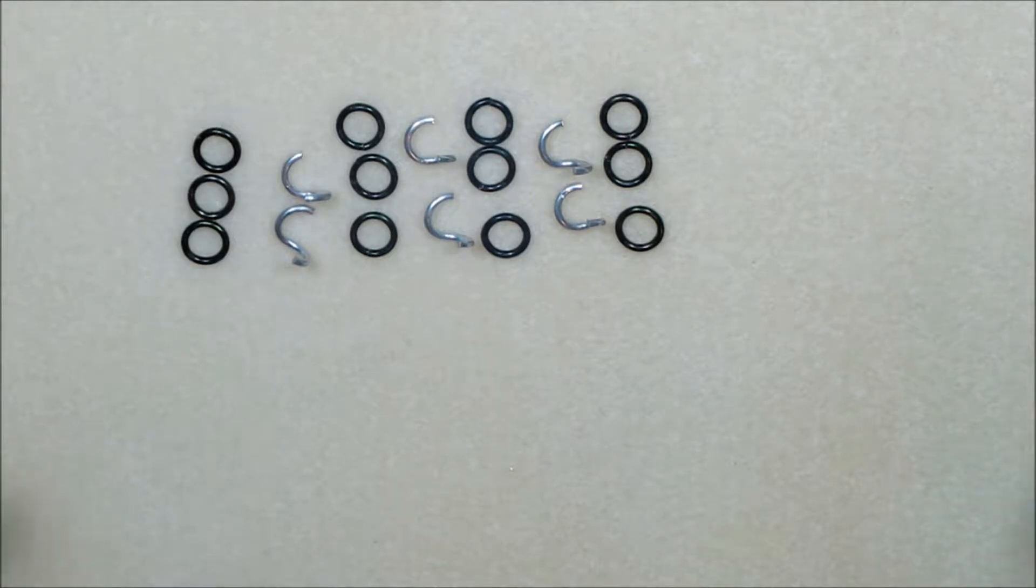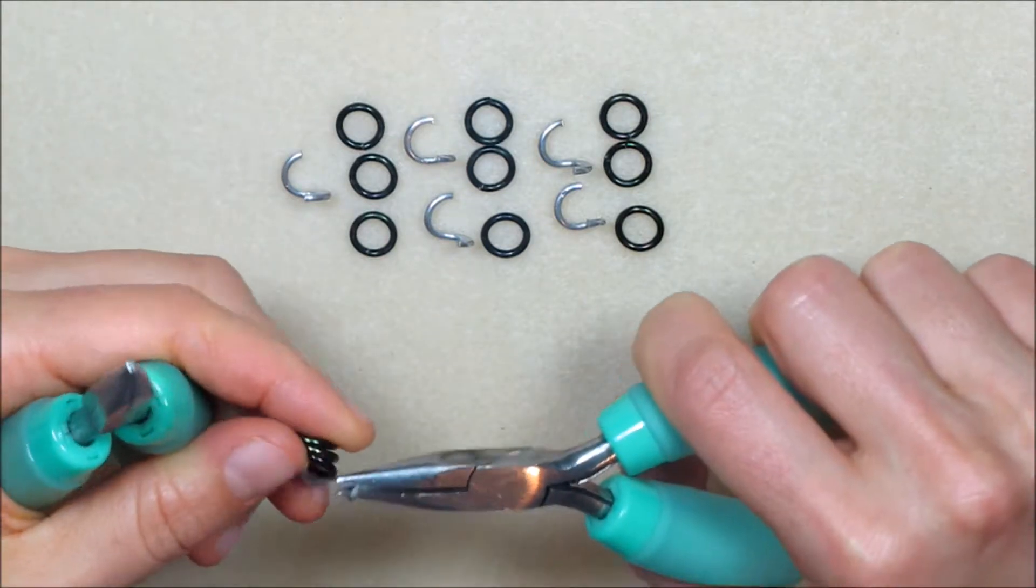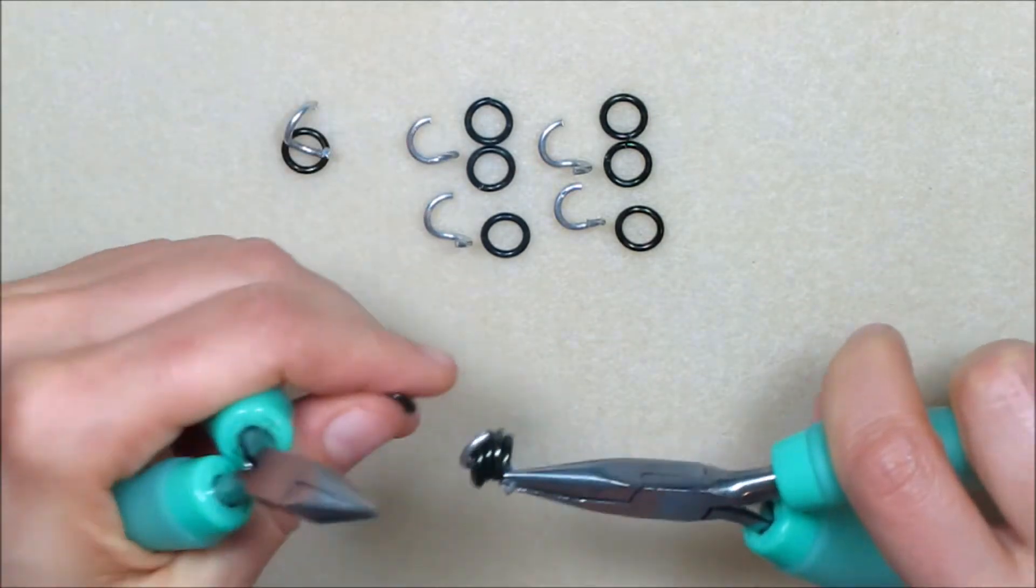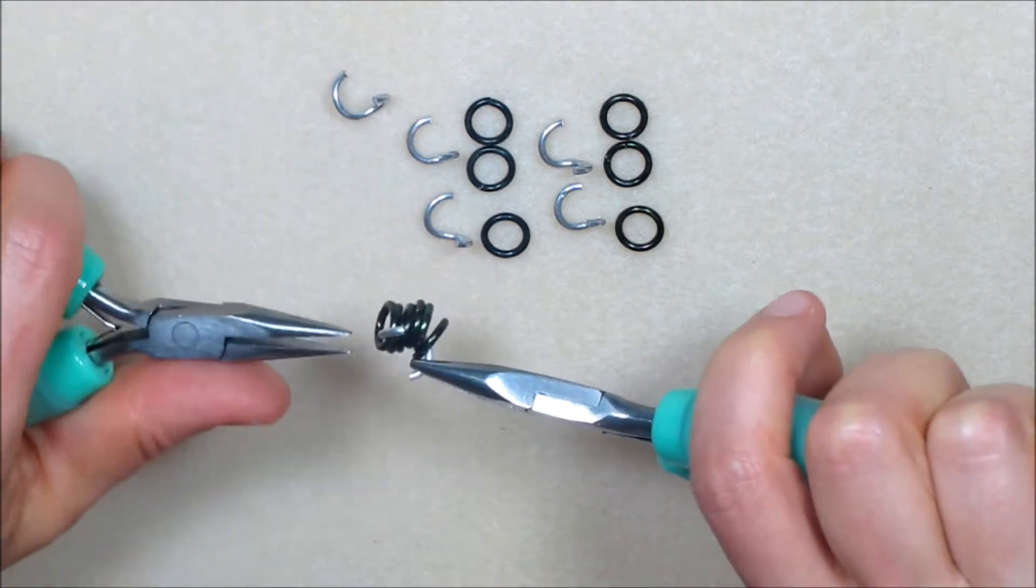Pick up one of the inner rings from set 1. Place all six of the outer rings from set 1 and set 2 on the first inner ring. Close the ring.